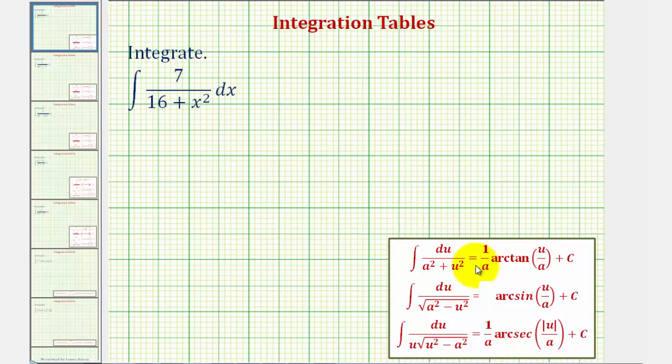Looking at these three integration formulas here, the variable a represents a constant, and notice how here on the left we have a squared. Looking at our integrand, notice how we have 16, which is our constant. So let's write 16 as four squared.